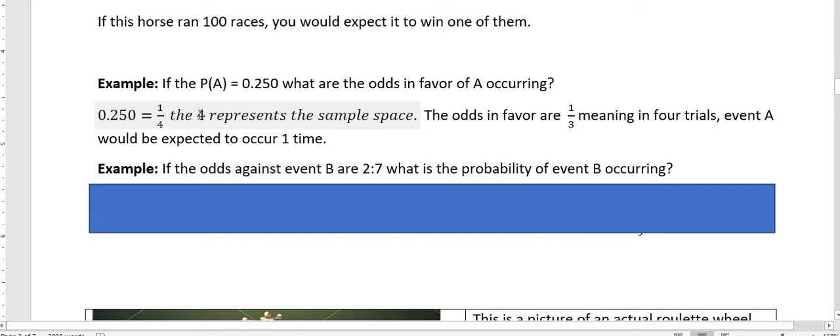And in this case, the 4 represents the sample space. Because remember, when you're finding a probability, the number on the bottom is the sample space. So out of 4 times, we would expect this person to win once. So the odds in favor are 1 favorable to 3 unfavorable. Meaning in 4 trials, event A would be expected to occur 1 time. So we notice that when we add 1 and 3 together, we get 4, which is what our sample space was. So we can take our probability and turn that into odds.